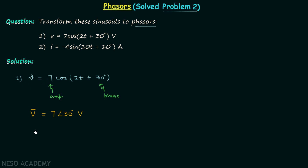If we want the phasor representation corresponding to the RMS value, then we divide the peak value by root 2. In this way we will have the phasor representation corresponding to the RMS value of voltage V. So this is our answer.